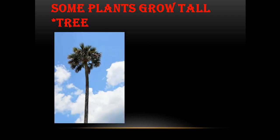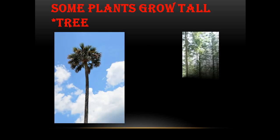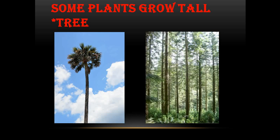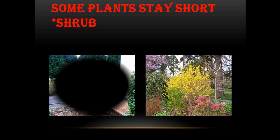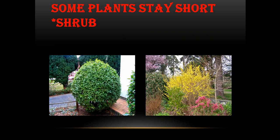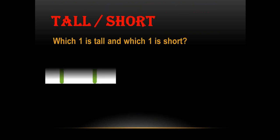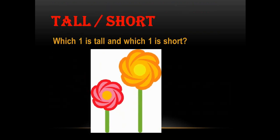Some plants grow very tall. See this picture — some plants grow very tall. For example, tall plants are trees, T-R-E-E, tree. And some plants stay short. Their name is shrub, S-H-R-U-B. So shrubs are short plants. Now in front of you there are two pictures — can you tell me which one is short and which one is tall? The pink one is short and the yellow one is tall. Good job!